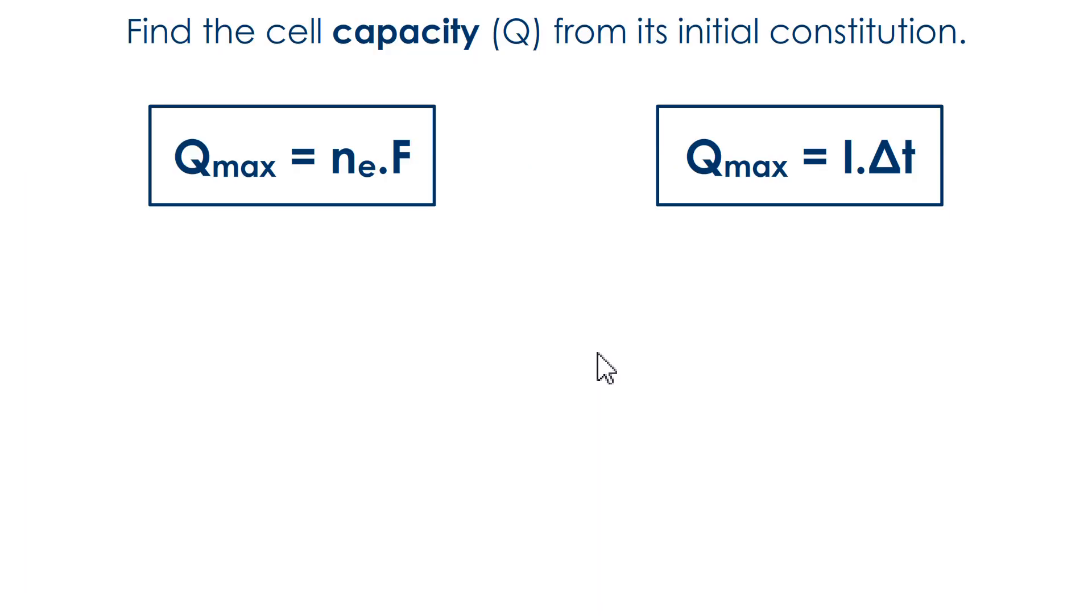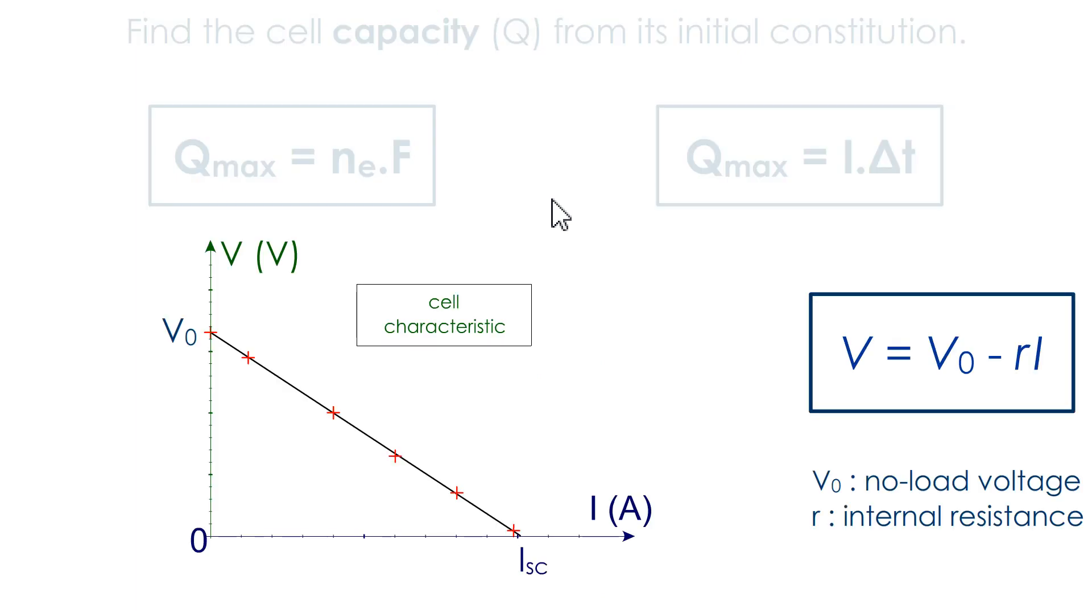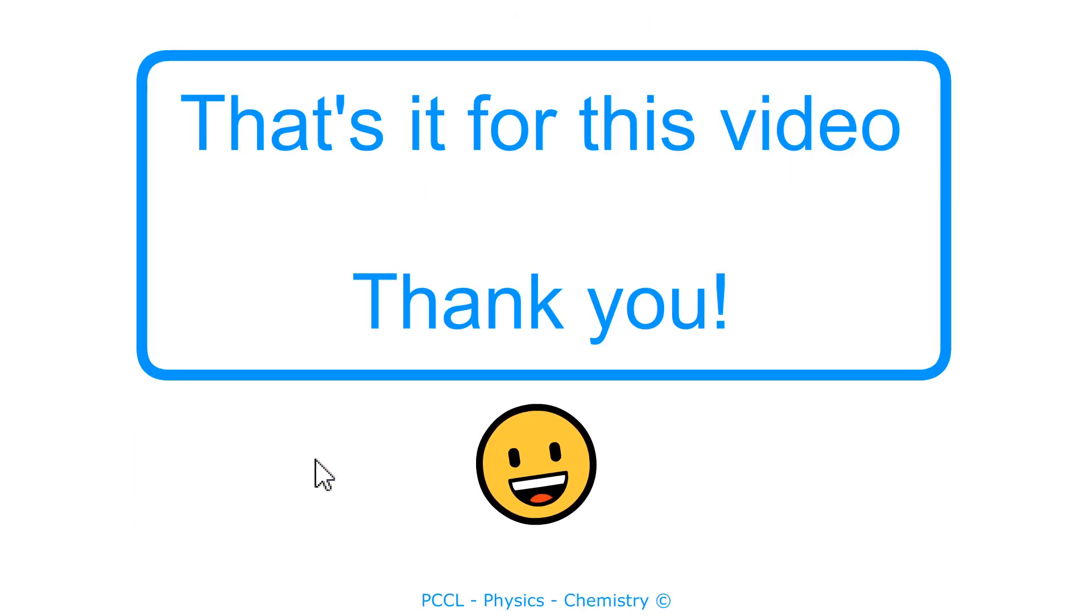You might be questioned about the electrical capacity of the battery. They are exactly the same formulas. The duration of the battery. Here, it would be delta T max. Would correspond to Q max. You may be asked questions about the characteristic curve of a battery. That's it for this video. Thank you.